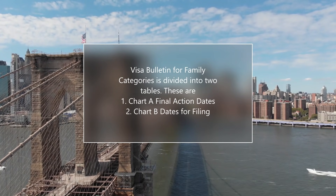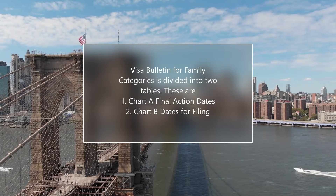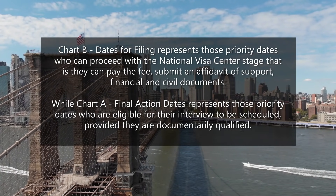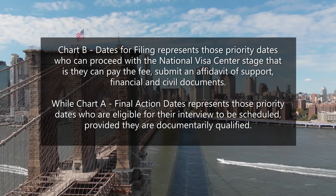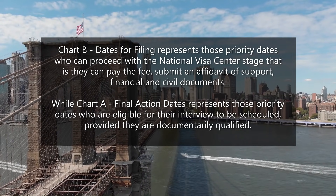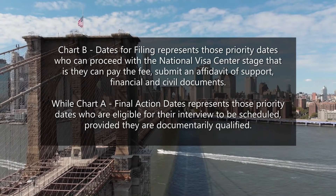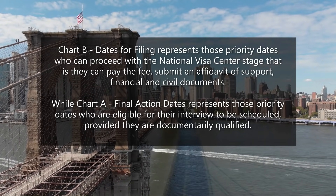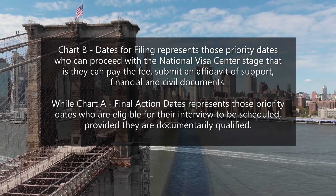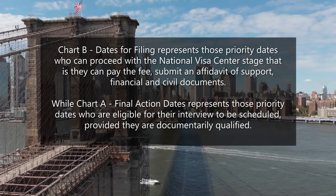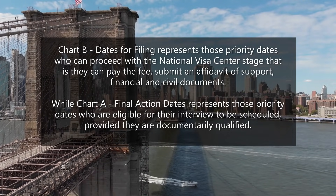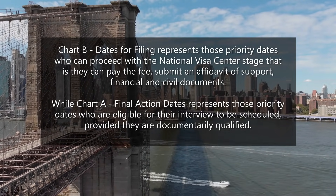Chart B dates for filing represents those priority dates who can proceed with the National Visa Center stage — that is, they can pay the fee and submit an affidavit of support, financial, and civil documents — if their priority date becomes current. Chart A final action dates represents those priority dates who are eligible for their interview to be scheduled, provided that they are documentarily qualified.